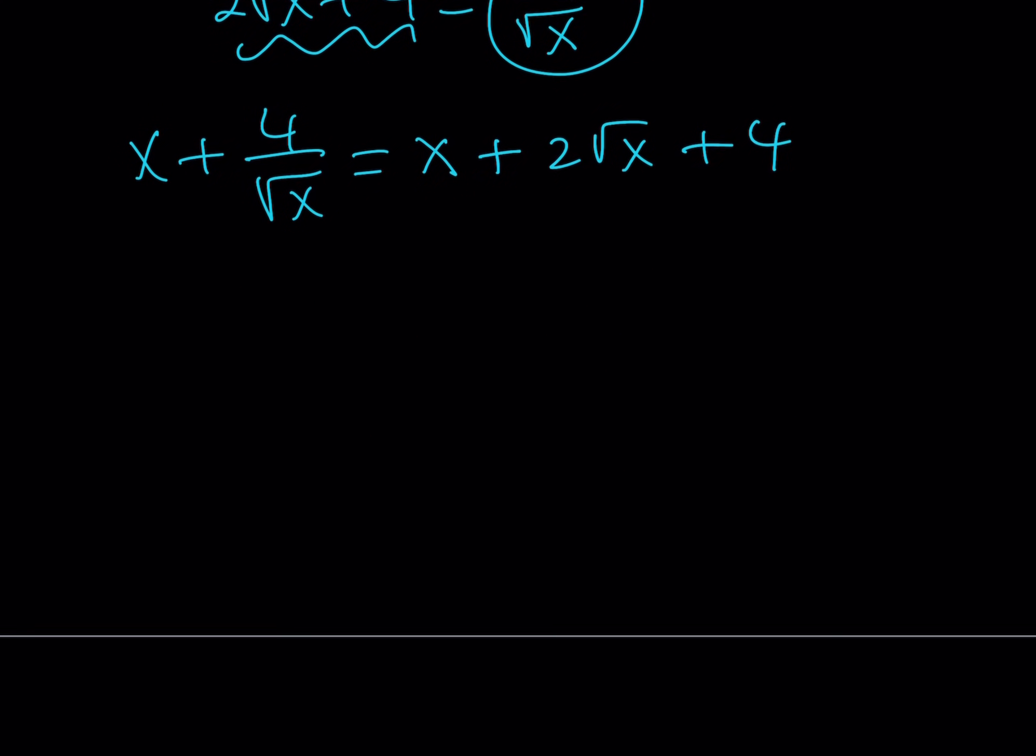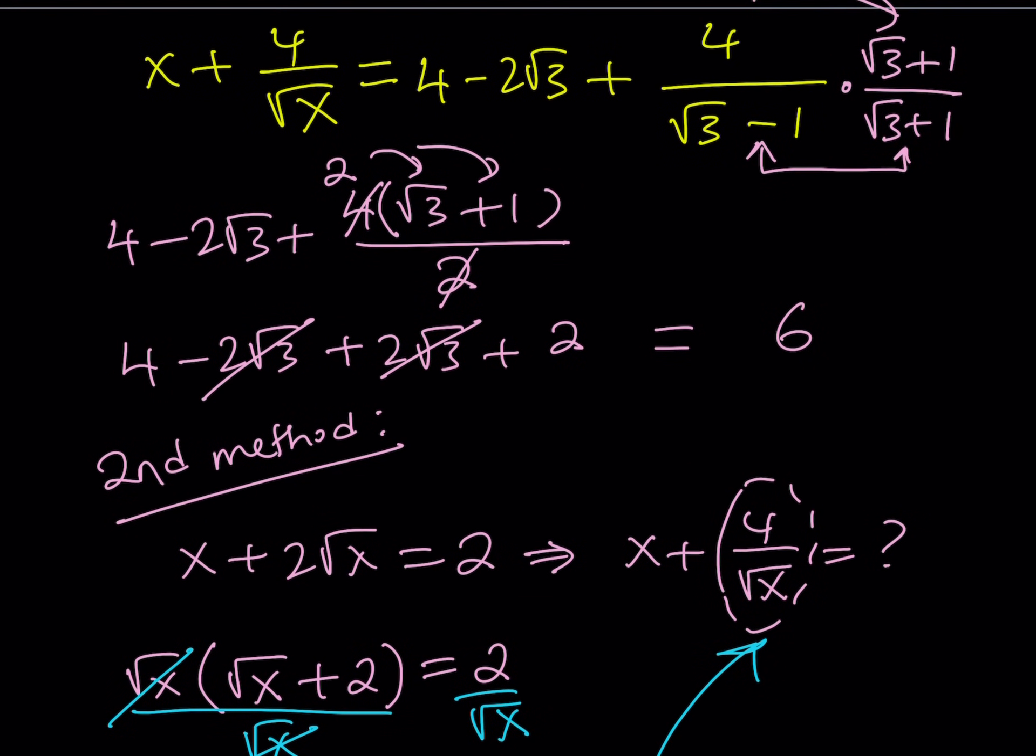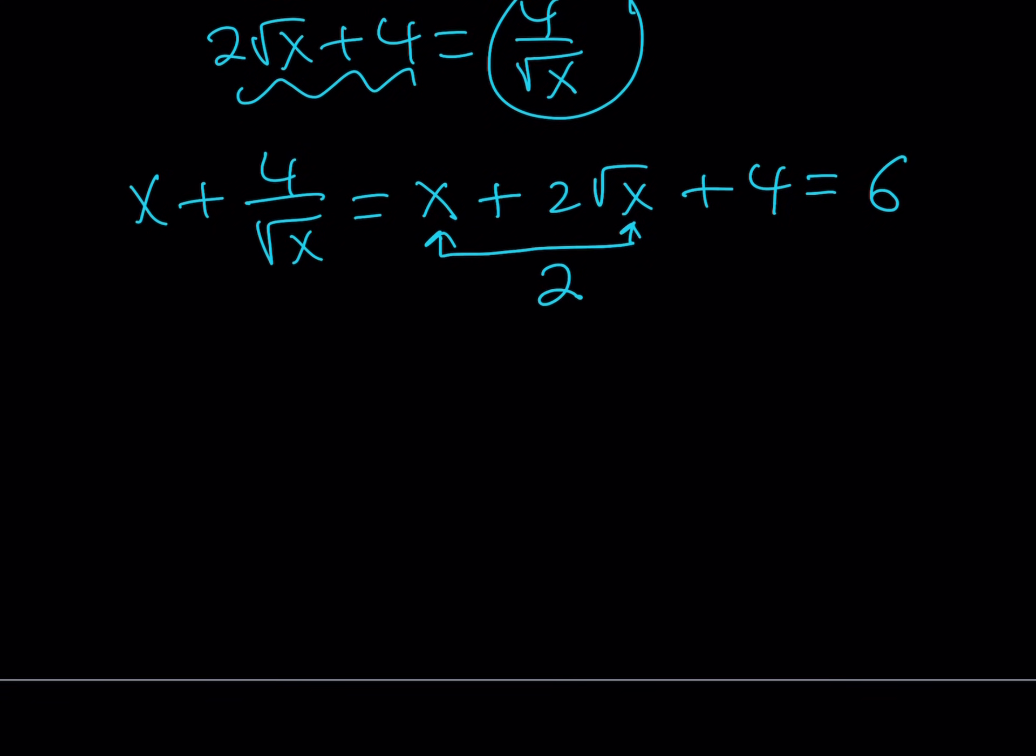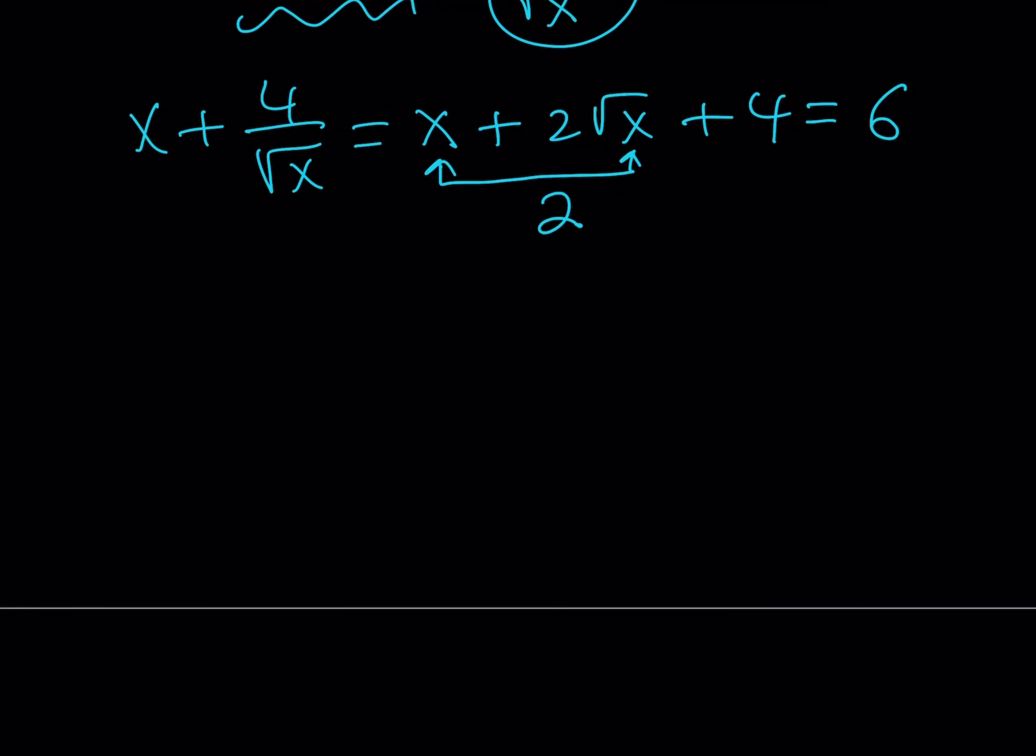And now, this brings us the original expression. Remember, we were given that x plus 2 root x is equal to 2 from here. Remember that? That was given. So, now I got that, which means I can replace x plus 2 root x with 2. And our expression is going to equal 6. And that is going to be the same answer that we got in the first method.